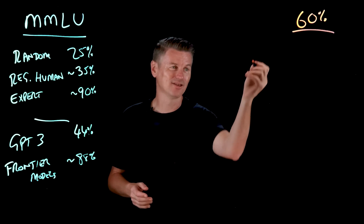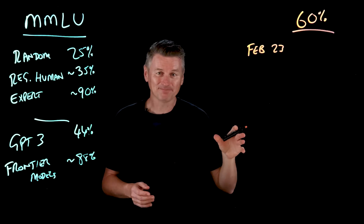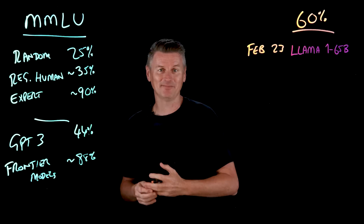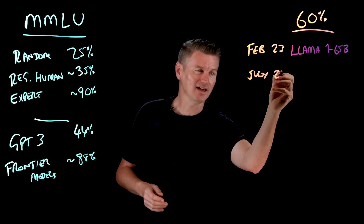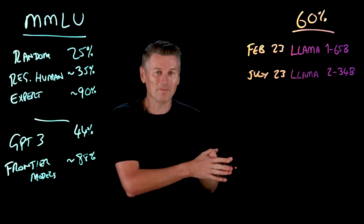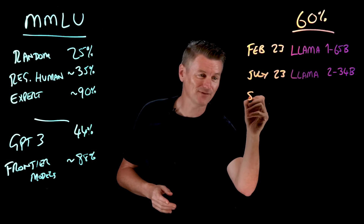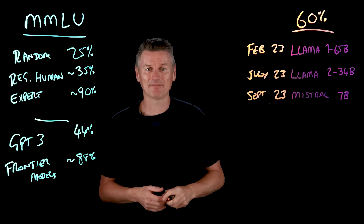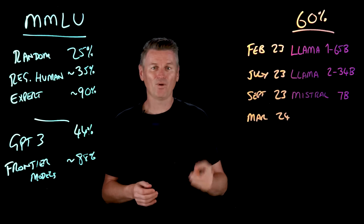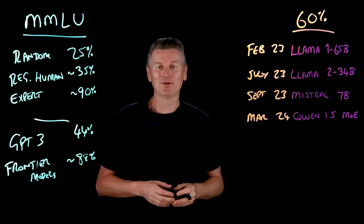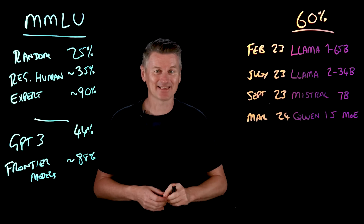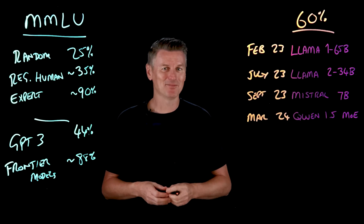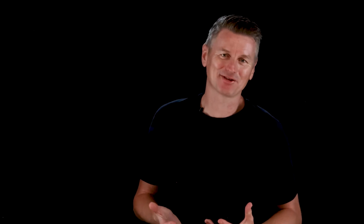In February 2023, the smallest model that could score above 60% was LLaMA 1 65B — 65 billion parameters. Just a few months later, by July of the same year, LLaMA 2 34B could do it with barely half the parameters. Then in September 2023, Mistral 7B joined the club at just 7 billion parameters. And in March 2024, Qwen 1.5 MoE became the first model with fewer than 3 billion active parameters to clear 60% — month by month, we're squeezing competent generalist behavior into smaller and smaller footprints.